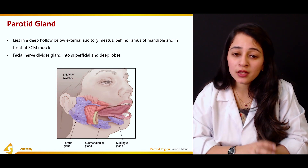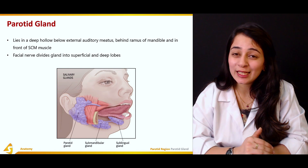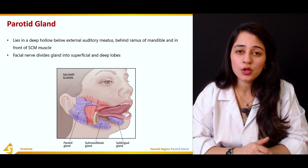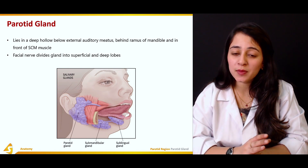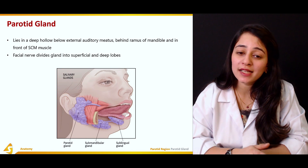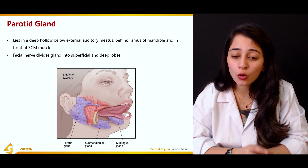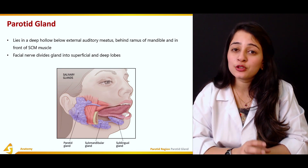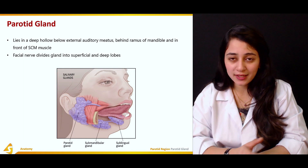The facial nerve divides the gland into the superficial and deep lobes. So the facial nerve, supplying this area, divides the parotid gland into a superficial lobe and a deep lobe.